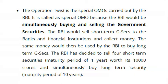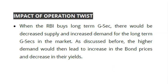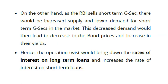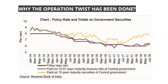Impact of Operation Twist: when RBI buys long-term government securities, there is a decrease in supply and increase in demand for long-term G-Secs. Higher demand leads to an increase in bond prices and a decrease in their yields. When RBI sells short-term government securities, there is increased supply and lower demand, decreasing bond prices and increasing their yields. Hence, Operation Twist brings down interest rates on long-term loans and increases rates on short-term loans.